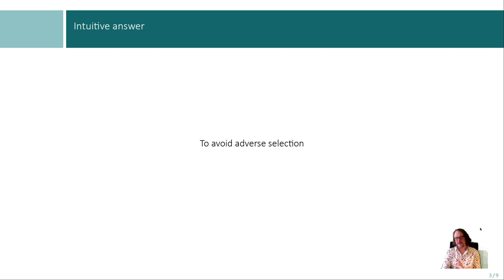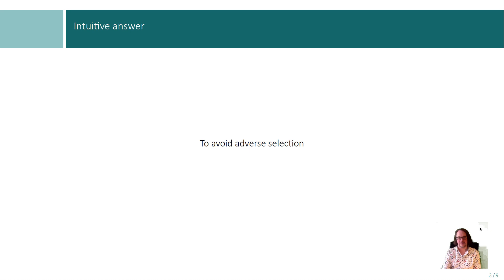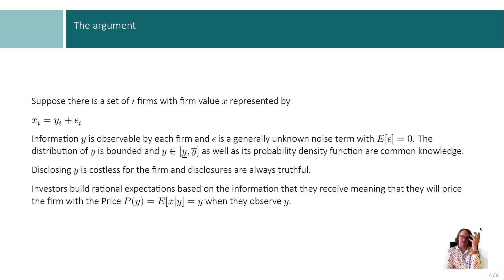Now we will look at the bare-bones unraveling model, and you will see why this model is so important and how it can be used for more refined analysis. We have a bunch of firms, and each firm has a firm value x. The firm value x can be expressed as some information signal y and an error term epsilon. The error term epsilon is unknown but has an expected value of zero.